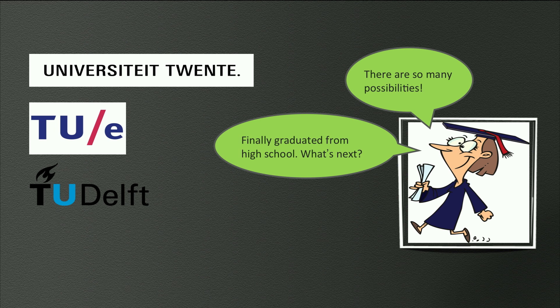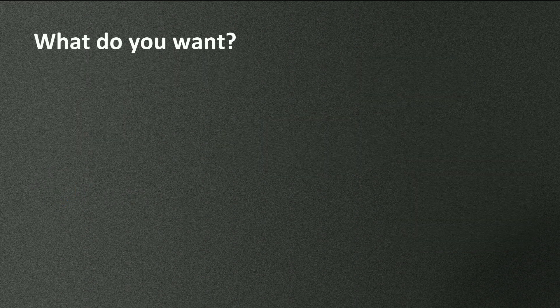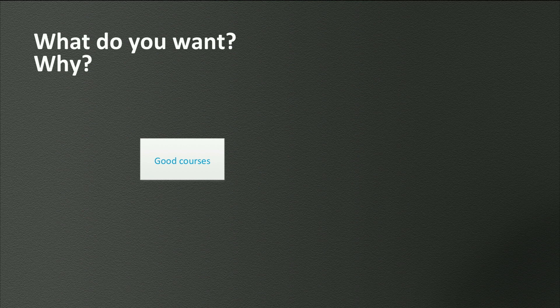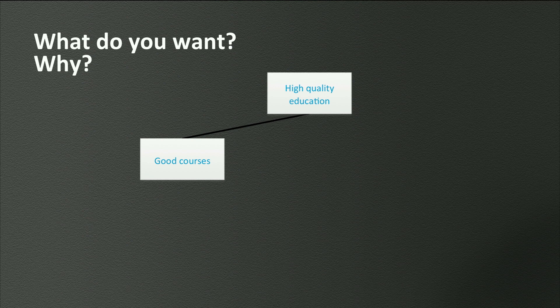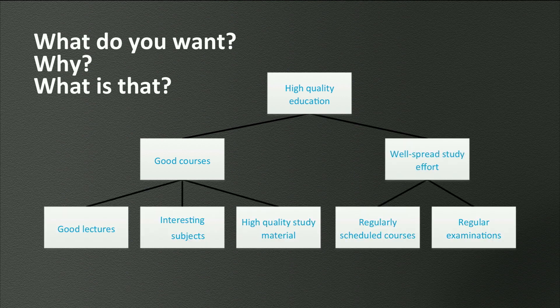The first question is: hey, high school graduate, what do you want? The first thing that pops into the mind of the student is good courses — apparently he wants to go to college. The next question is, why does the student want that? The answer could be: for the purpose of high quality education. To complete the goal tree, the next question is what is this exactly — high quality education? The student answered that this is about a well-spread study effort. Repeating the 'what is this?' question results in the lowest layer of the goal tree with criteria that can be used to score different alternatives.